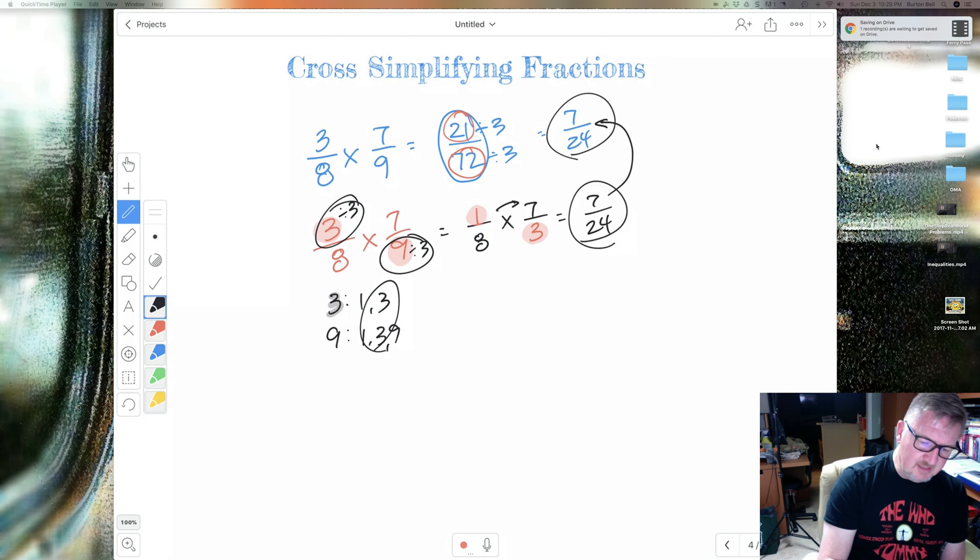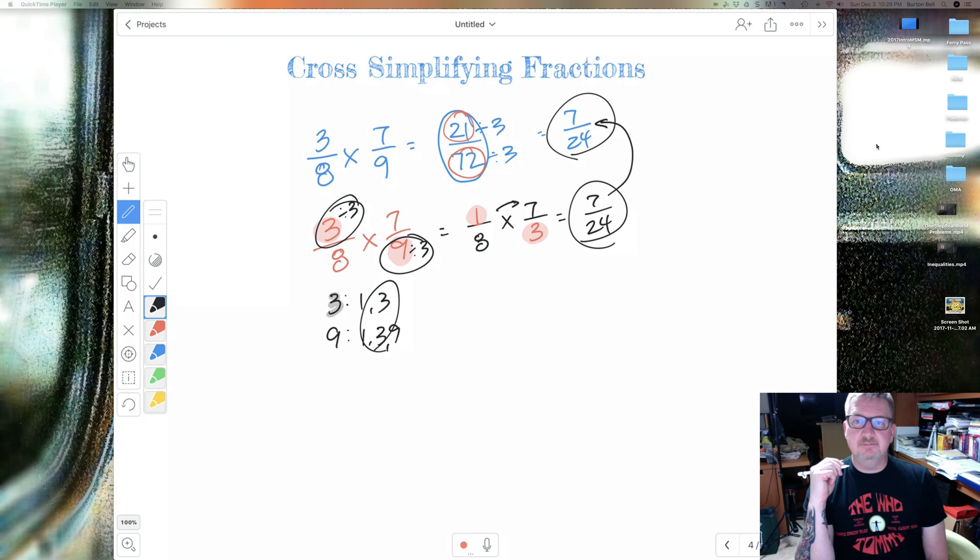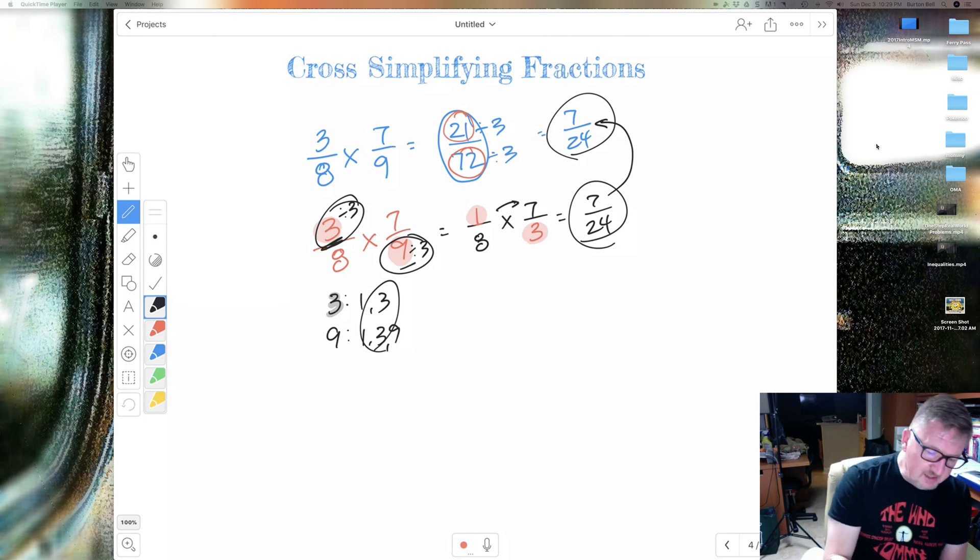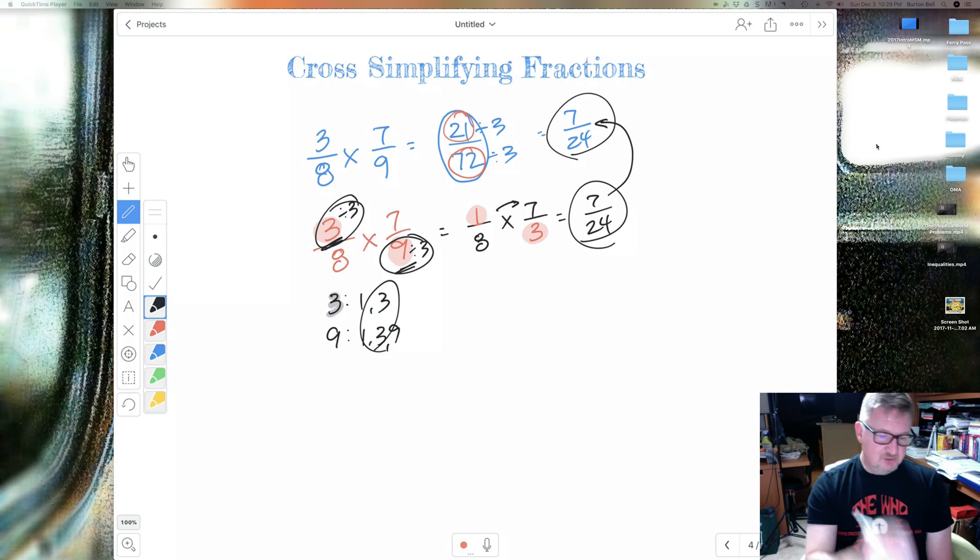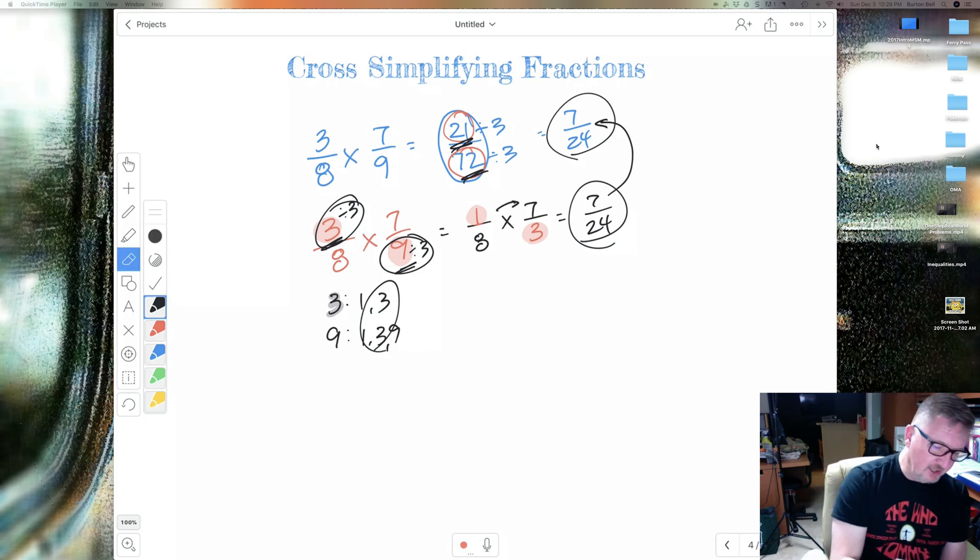Looky, looky. I got the same answer that I got right there. So this is just, and it's easier to work with 3 and 9 than it is to work with 21 and 72. So this is just an easier way, a much easier way to solve multiplying fractions.